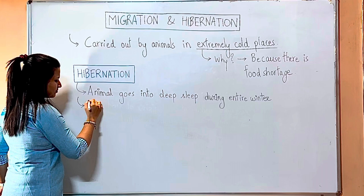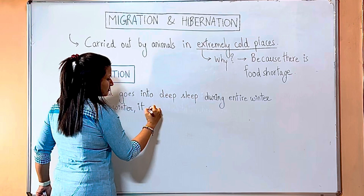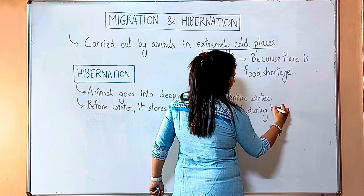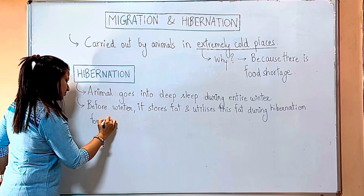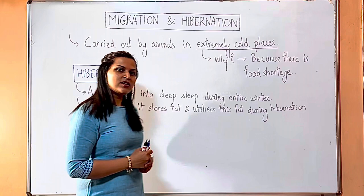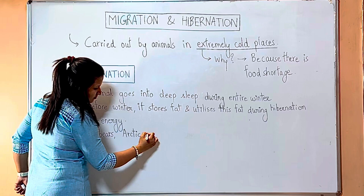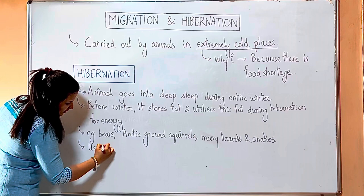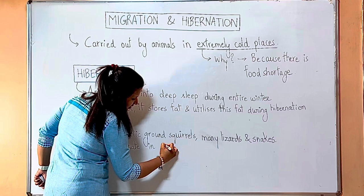Before winter arrives, during the summer season, the animal makes sure it eats a lot and stores a lot of fat. Then as winter approaches it goes into the caves, slows down, goes to sleep, and does not wake up until winter is over. The animal becomes inactive and goes into deep sleep for the entire winter. Examples of hibernating animals include bears, the Arctic ground squirrel, crocodiles, and many lizards and snakes. Animals usually hibernate in caves or underground burrows.